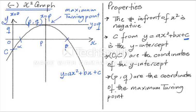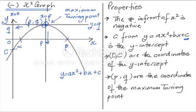The point at the top of the graph is the maximum turning point. It has an x-coordinate of P and a y-coordinate of Q. So (P, Q) are the coordinates of the maximum turning point. Every point on a graph has both an x-coordinate and a y-coordinate — the x-coordinate for the maximum turning point is P and the y-coordinate is Q.